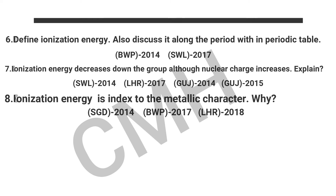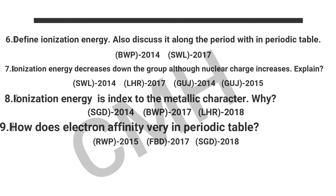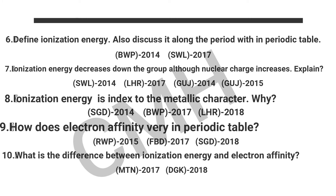Question number 7: Ionization energy decreases down the group although nuclear charge increases — explain. Question number 8: Ionization energy is an index of metallic character — why? Question number 9: How does electron affinity vary in a period?